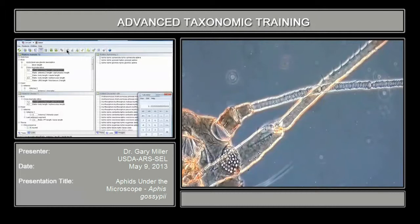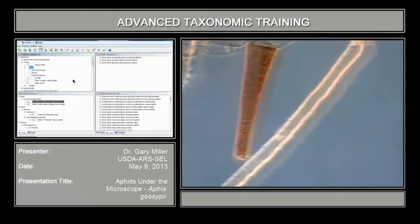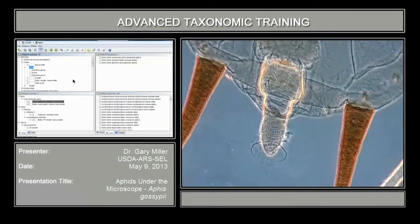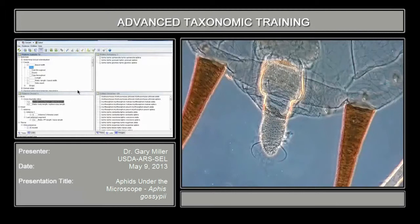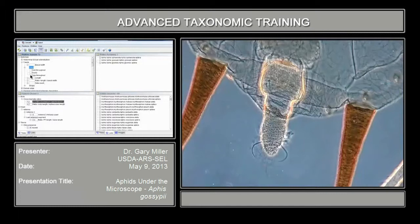Now we're down to the cauda. We're asked whether the cauda is dark throughout, dusky, or pale. This is sometimes a hard call to make with stained or slide-mounted specimens. In this case it's certainly paler — a good comparison is the cauda color in relation to the siphunculi, and you can see it's pale compared to the siphunculi. So we'll click on pale.